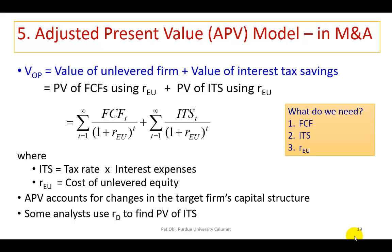This presentation shows an example of the APV approach in merger valuation. The model shows the value of a levered firm to be the sum of two parts. The first is the value that the firm would have if it did not use debt — the value of the unlevered firm. The second is the additional value the firm has on account of its use of debt, which is the present value of interest tax savings.